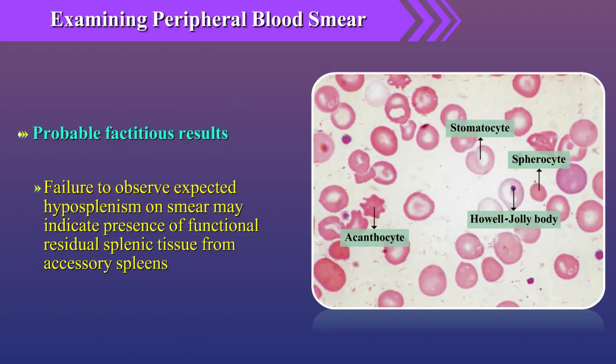Conversely, failure to observe expected hyposplenism on smear may indicate presence of functional residual splenic tissue from accessory spleens.